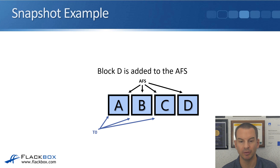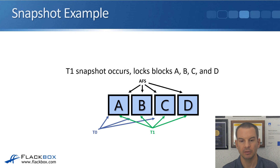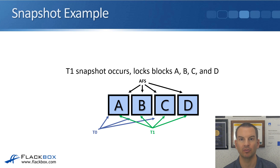Then a user writes more data to the volume. Block D is added to the active file system, so the AFS now contains blocks A, B, C, and D. The T0 snapshot is read-only and never changes, so it always contains pointers to blocks A, B, and C. Next, we take a T1 snapshot — pointers to whatever is in the active file system right now: blocks A, B, C, and D.